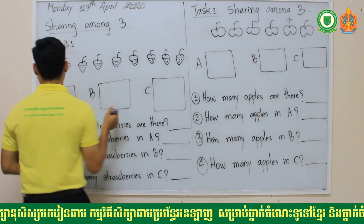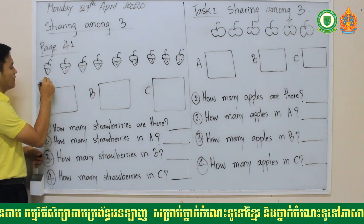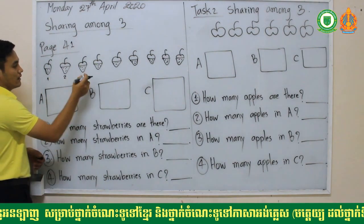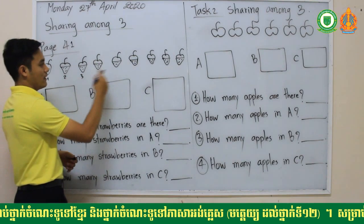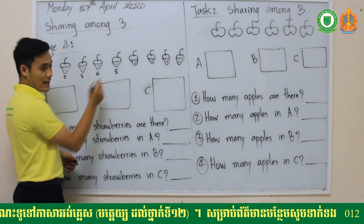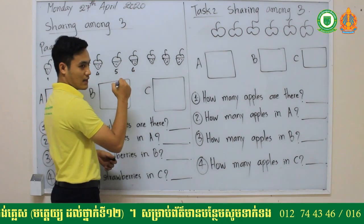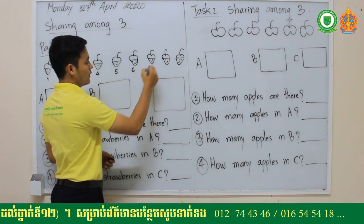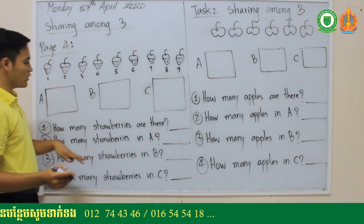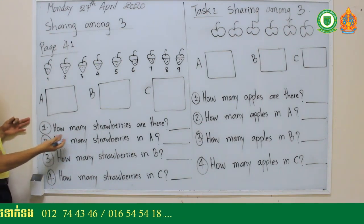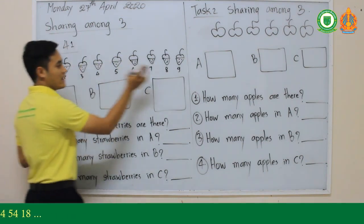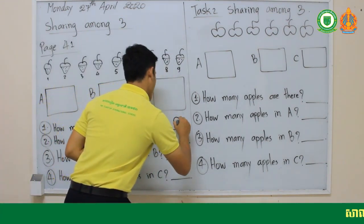Let's count: one, two, three, four, five, six, seven, eight, nine. So question one — how many strawberries are there? The answer is nine. Complete: nine strawberries.